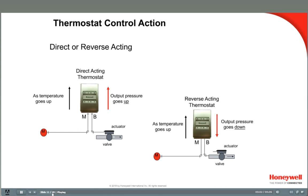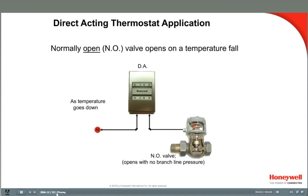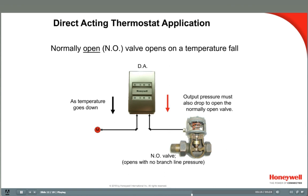Another option to consider when selecting a thermostat is whether it is direct acting or reverse acting. The direct acting thermostat has a direct temperature-to-output-pressure relationship — as the sensed temperature goes up, the outlet pressure goes up. The reverse acting controller has the opposite relationship — as the sensed temperature goes up, the output pressure goes down. For example, a fan coil unit with a normally open valve needs a direct acting thermostat, because as the temperature goes down, the valve must open to heat the room, and a normally open valve opens as air pressure to it falls.